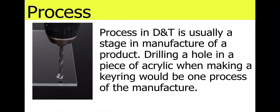Process. In D&T, a process is usually a stage in the manufacture of a product. For example, drilling a hole in a piece of acrylic when making a keyring would be one process in the manufacture. Each manufacture is broken down into stages, which are called processes.